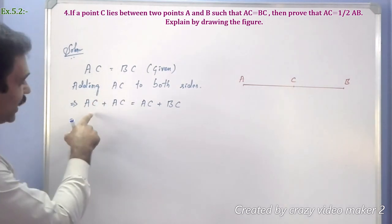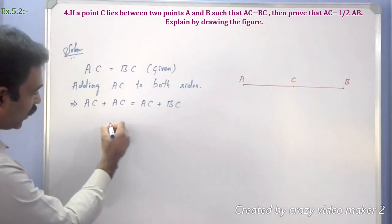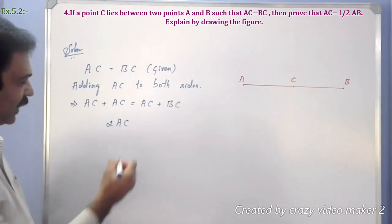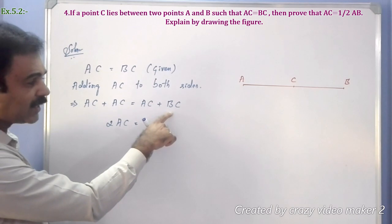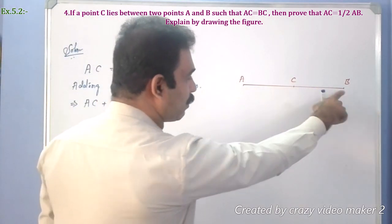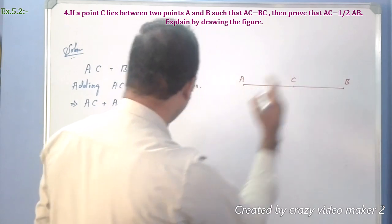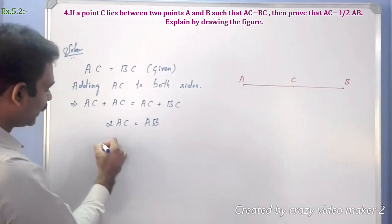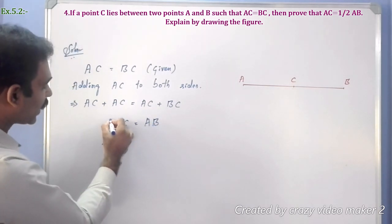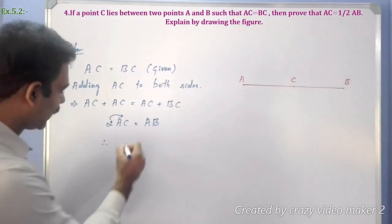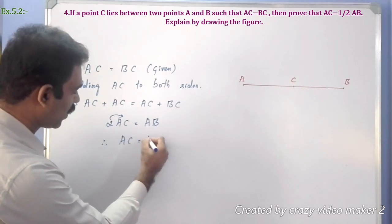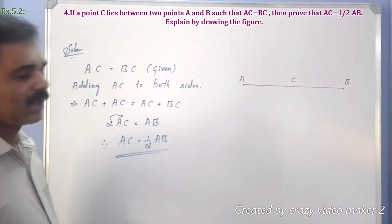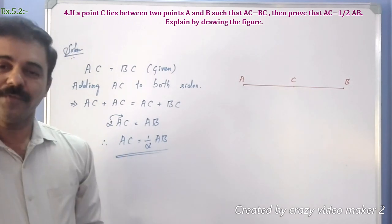So, 2AC equals AC plus BC. But AC plus BC can be written as AB. Therefore, 2AC equals AB. Transposing 2 to the right-hand side, we get AC equals half of AB. Hence proved: AC equals half of AB.